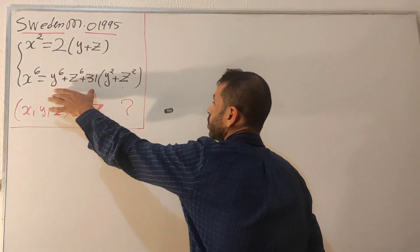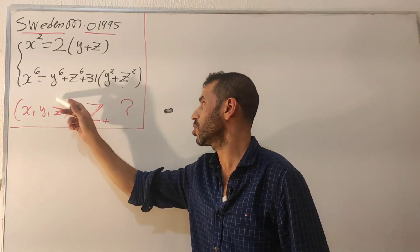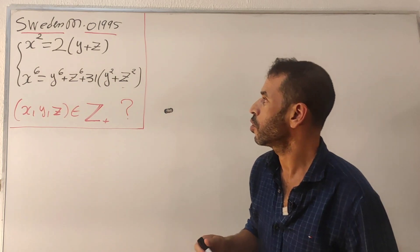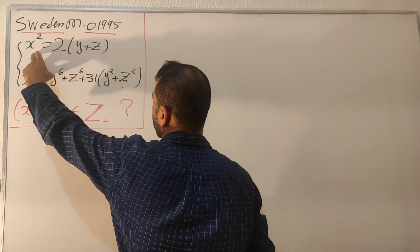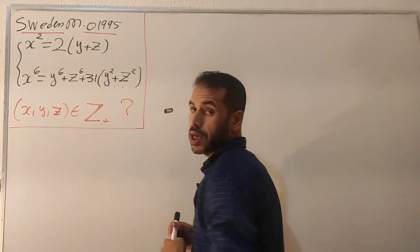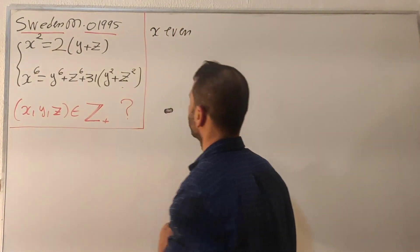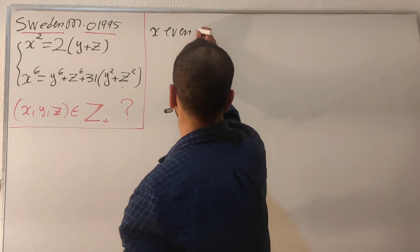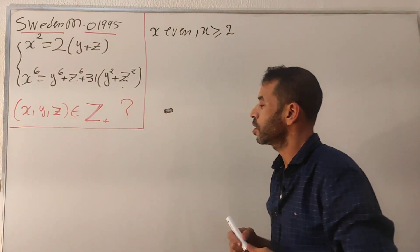Let's go through this. Before we start, just look at the equations and pick up nice observations. From the first equation, x squared equals twice y plus z. We can see that x must be even. Also, since we are dealing with positive integers, x must be greater than or equal to 2.